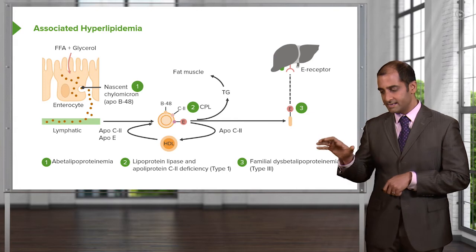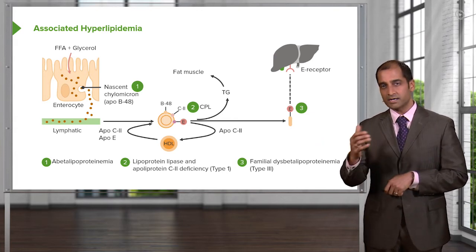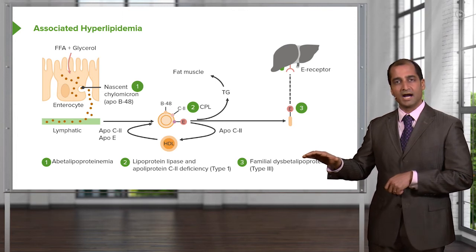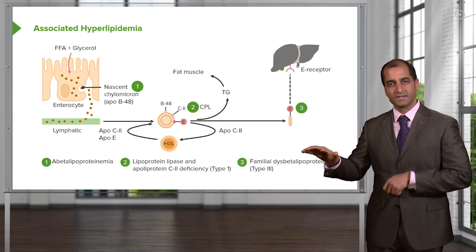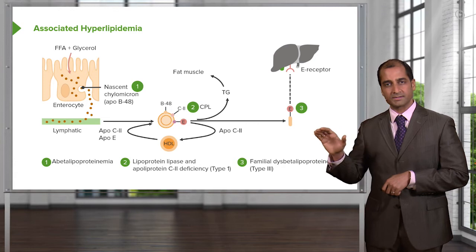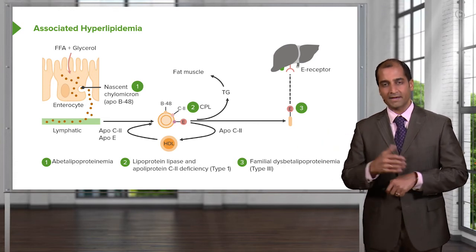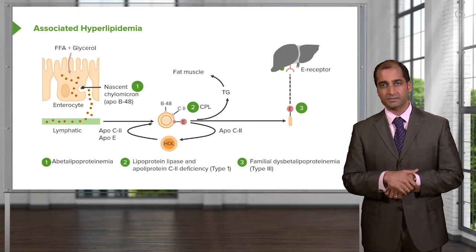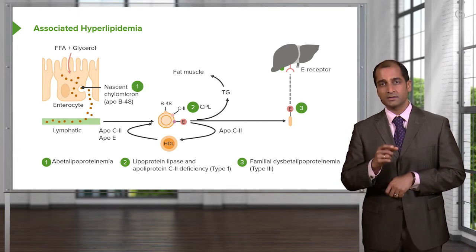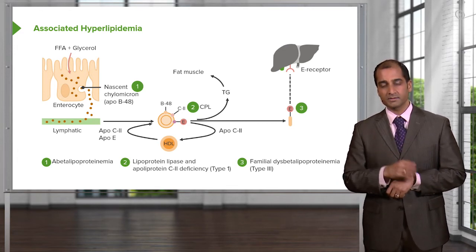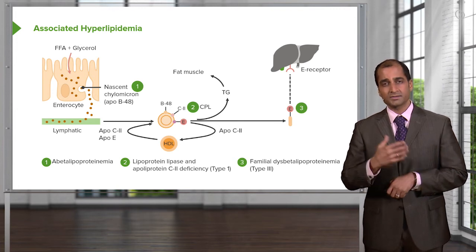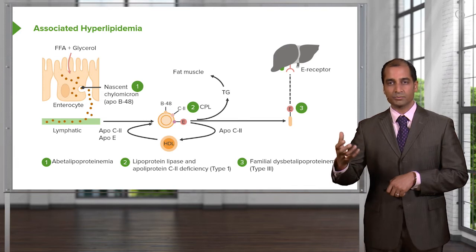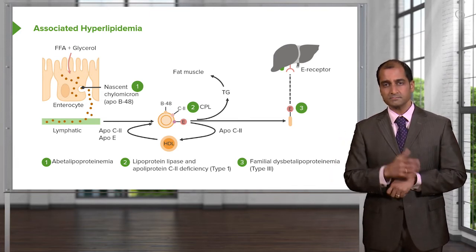HDL comes over to the chylomicron and says: you have now been knighted — I am imparting onto you C2 and E. Now you have a mature chylomicron, still filled with triglycerides. You're literally in your circulation. The objective is to make its way to the liver.